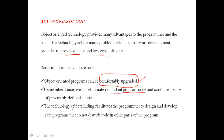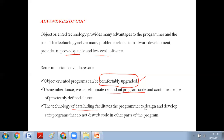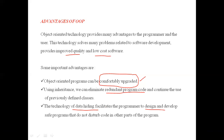Data hiding is another advantage. Object-oriented programming facilitates data hiding. With the help of encapsulation, data hiding is achieved so that one part of the code cannot be disturbed by another part. Class A has its own variables and Class B has its own variables; they cannot disturb each other. Data hiding facilitates the programmer to design software that does not disturb code in other parts of the program.